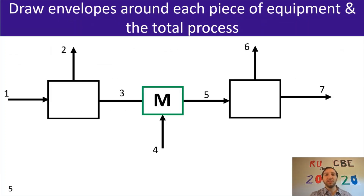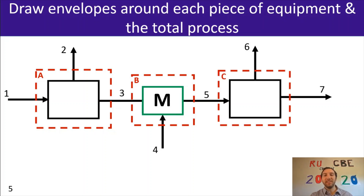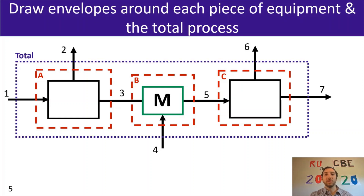To give an example of what I mean by drawing an envelope: I'm just drawing a box around my unit process so I can identify all the streams coming in and out. I've labeled the first envelope A, the next envelope B around the mixing point, and then envelope C. I've got an envelope around each of my unit processes so I can explore the material balances for each unit. I can also draw a total envelope surrounding the entire system, focusing only on streams entering or exiting the entire system.